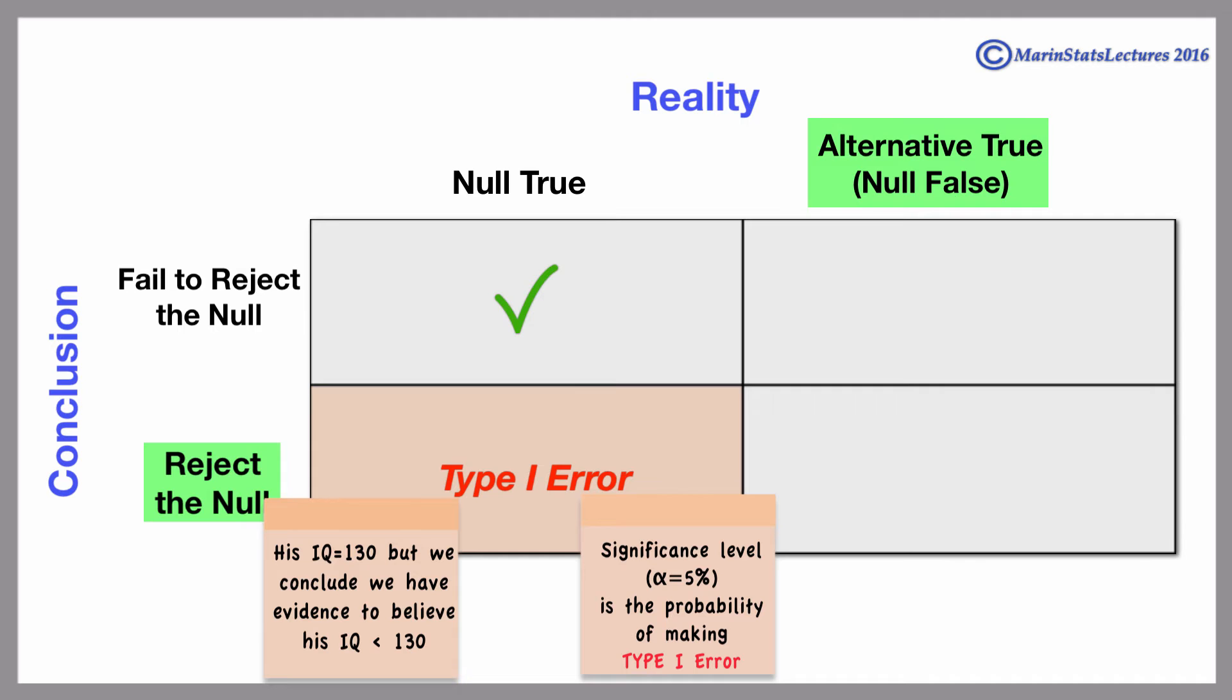If we reject the null in favor of the alternative, we've made the correct decision. If, on the other hand, we fail to reject the null, we will have made what we call a type 2 error.